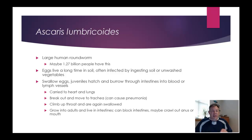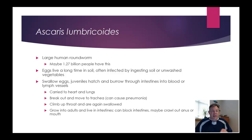They might potentially, if they break loose, wander and crawl out of your anus or your mouth. A very closely related round worm infects pigs, and you can see that heavy infestations in the intestines can be bad for the infected individual — they can get so thick they can really block your intestines.